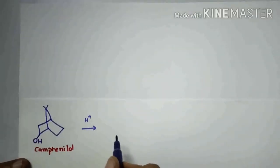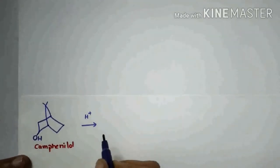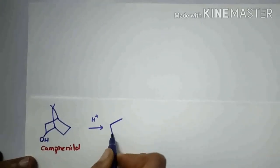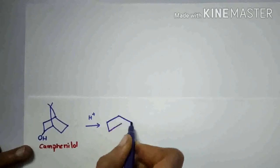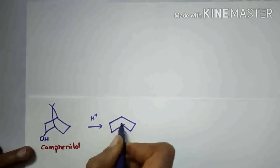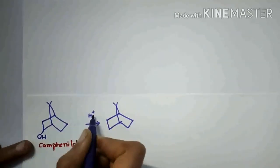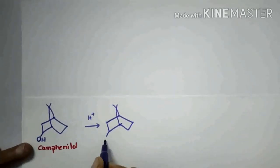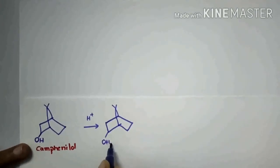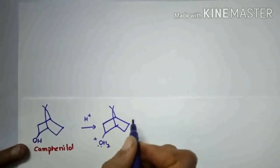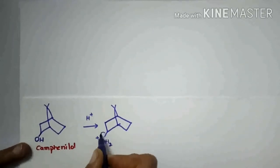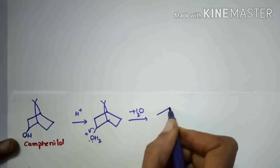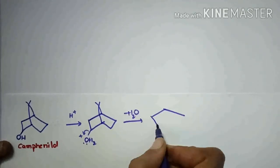Let us see how to solve some questions on this topic. First, camphanol. It is protonated by the acid catalyst and it will form H2O⁺. It is unstable, so it is removed as a water molecule by bond breakage, forming a carbocation.